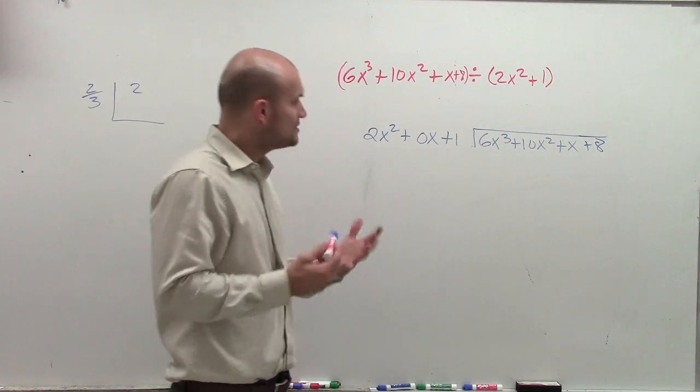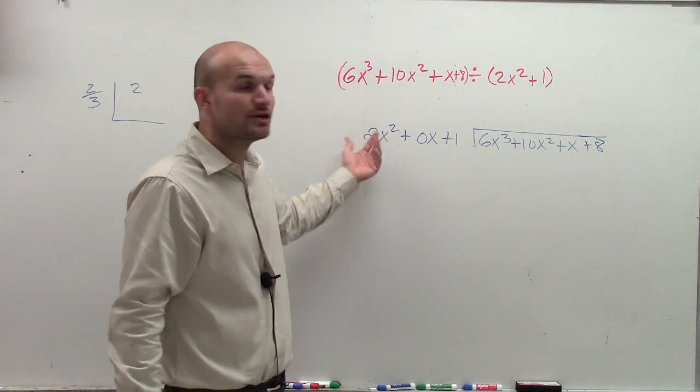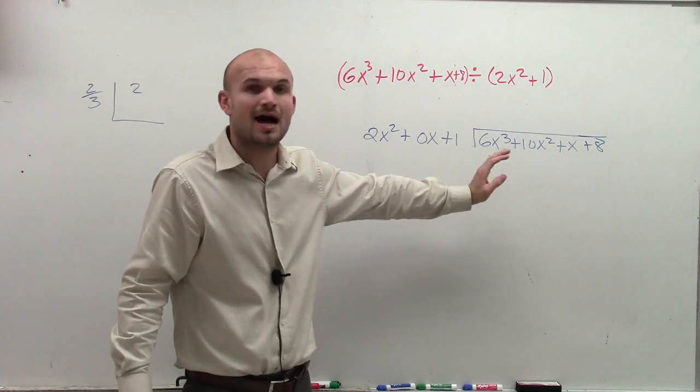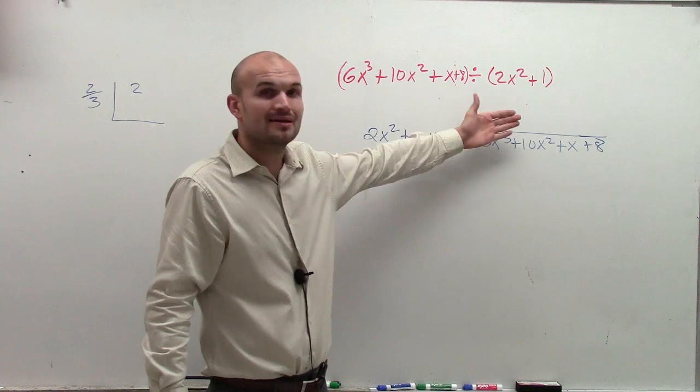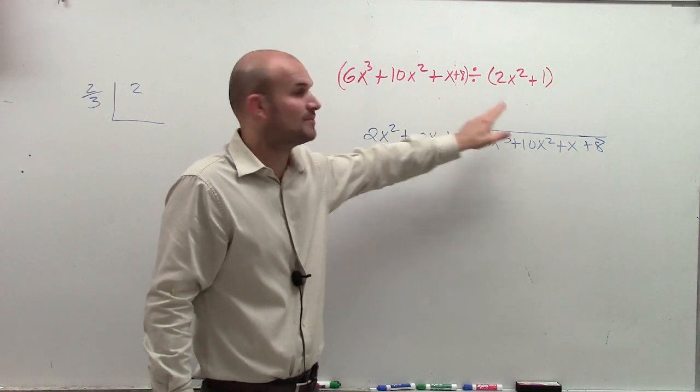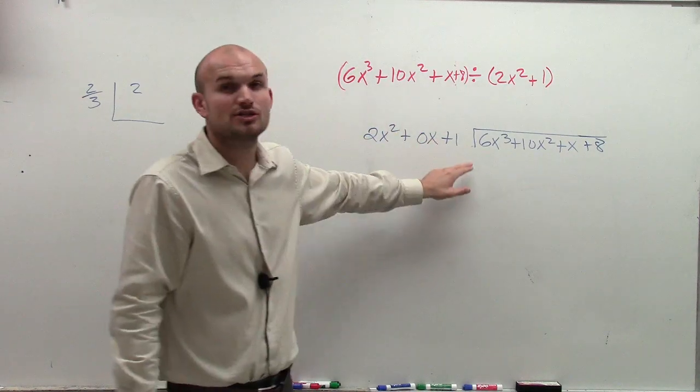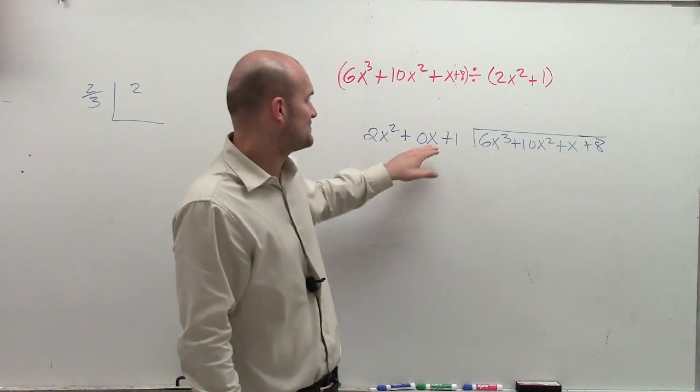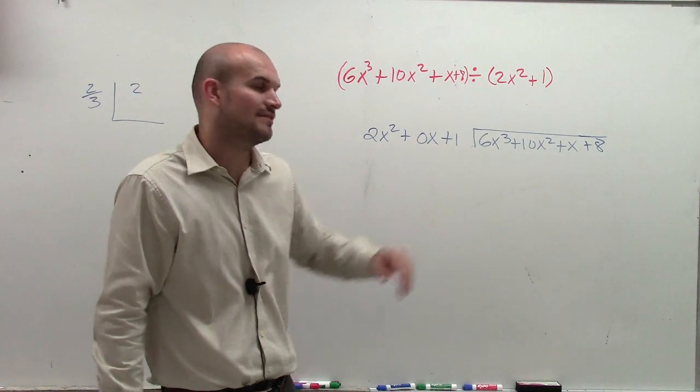Because when doing long division, you're going to only take your first term of your divisor and divide it into your dividend. However, once you find how many times it divides into part of your quotient, you're going to multiply that number times every single term in your divisor. And it's important that you have some number placeholders so you don't get kind of lost off track.